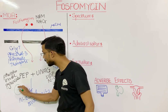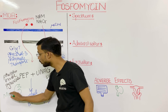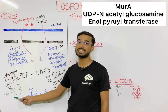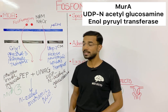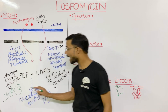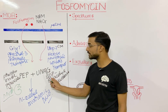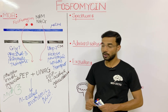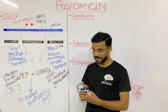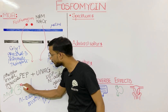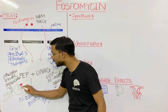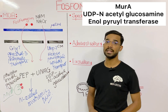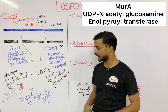That enzyme is called MurA — also known as UDP-N-acetylglucosamine enolpyruvyl transferase. This enzyme is responsible for the conversion of N-acetyl glucosamine into N-acetyl muramic acid. Fosfomycin binds to this enzyme and inhibits MurA.